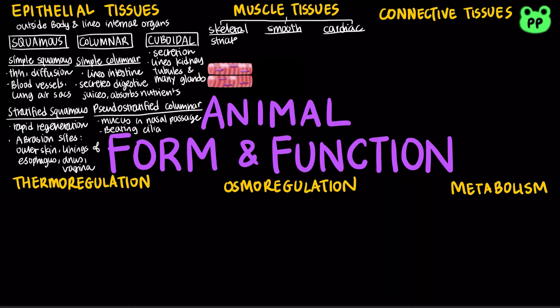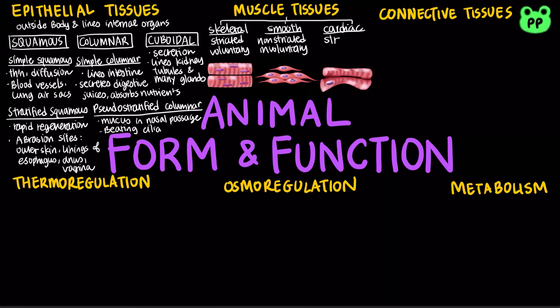Skeletal muscles have striated tubular multinucleated fibers and are voluntary. Smooth muscle has spindle-shaped non-striated uninucleated fibers that are involuntary. Cardiac muscles have striated branched uninucleated fibers. They are found in the walls of the heart and have intercalated discs and gap junctions.